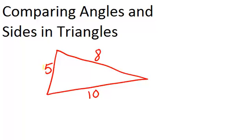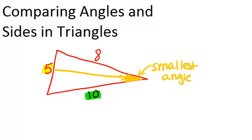So since the smallest side is five, that means that the smallest angle will be across from that over here. So the smallest angle will be this one. The biggest angle will be across from the biggest side, and the biggest side is ten. So that means that the biggest angle will be over here across from the side that's biggest.